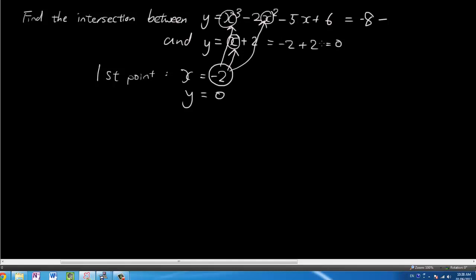minus negative 2 times 5 becomes positive 10. Negative 2 times negative 5 is positive 10 plus 6. So that is 0. So yes, the first point works. And now let's go to the second point of intersection.